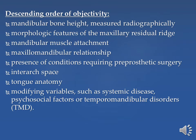In descending order of objectivity, the criteria are: mandibular bone height measured radiographically and morphologic features of the maxillary residual ridge; mandibular muscle attachment; maxillomandibular relationship; presence of conditions requiring pre-prosthetic surgery and inter-arch space; tongue anatomy; and lastly, modifying variables such as systemic disease, psychosocial factors, or temporomandibular disorders.